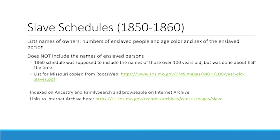The slave schedule is the last set of federal schedules we'll talk about today. The slave schedules occur for 1850 and 1860 — they list the names of owners, the numbers of enslaved people, and the age, color, and sex of the enslaved person, but do not include the names of enslaved people. 1860 was supposed to include names of those over 100 years old, but this is only done about 50% of the time. On our website we have a list for all the named enslaved persons from Missouri who were over 100 years old. The slave schedules are indexed on both Ancestry and FamilySearch, and we plan to digitize and index them ourselves as well.